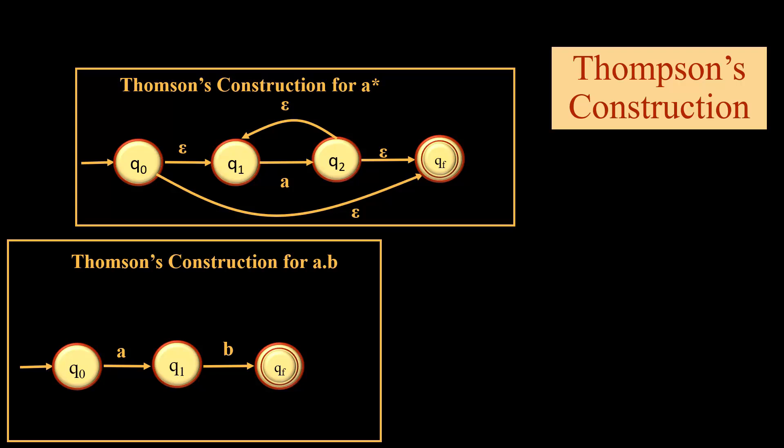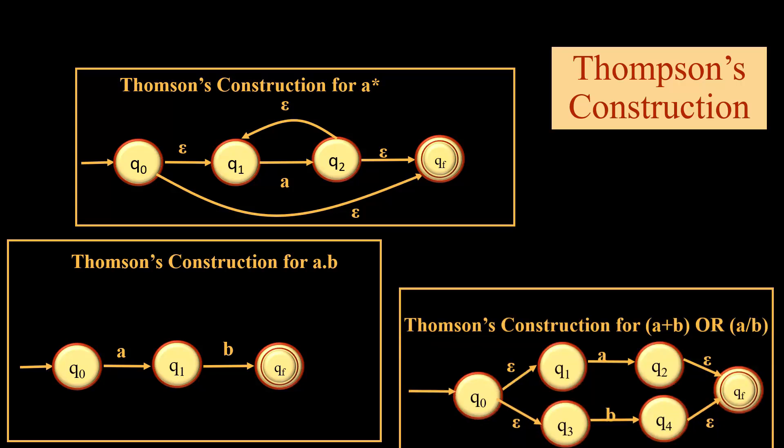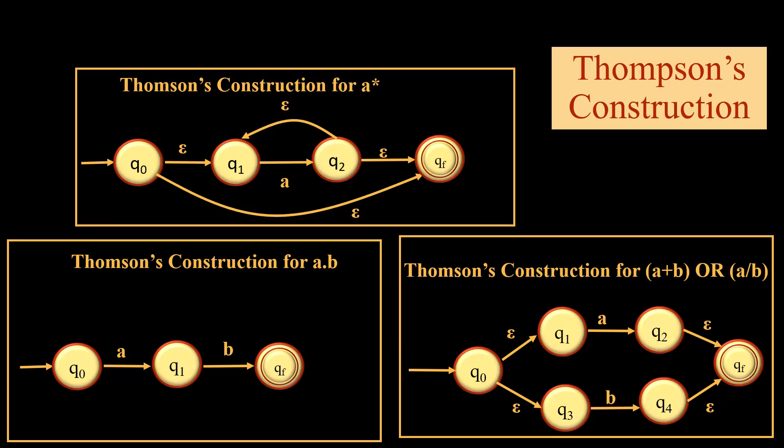Likewise, for concatenation, that is a dot b, we don't have any epsilon in Thompson's construction. And for a plus b or, we have four epsilons: q0 to q1, q0 to q3, q2 to qf, and q4 to q1.